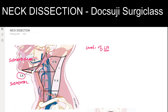Levels 2, 3, and 4 are called the jugular lymph nodes. Level 2 is the upper jugular, Level 3 is the middle jugular, and Level 4 is the lower jugular. Level 2 is further divided into 2a and 2b based on the spinal accessory nerve — anterior to the nerve is 2a, and posterior is 2b.